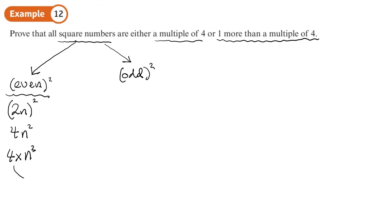So an even number squared is going to give you 4n squared. We've got 4 times something. These are multiples of 4.